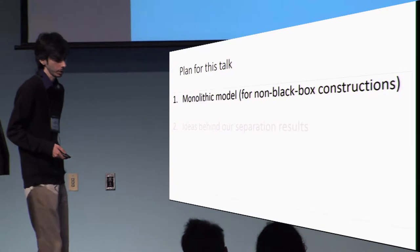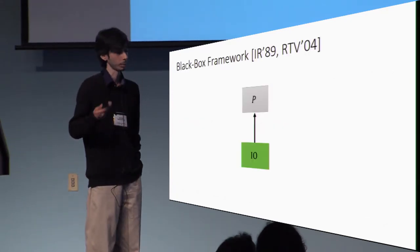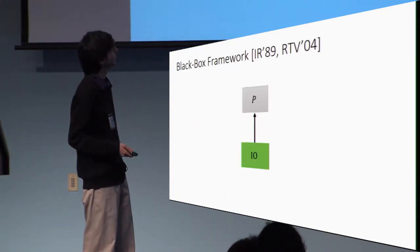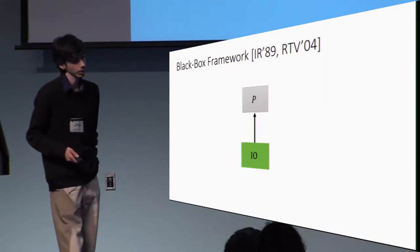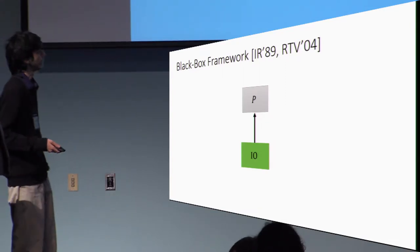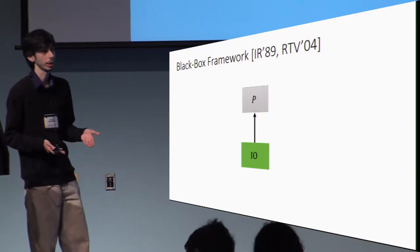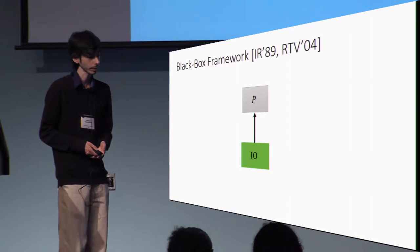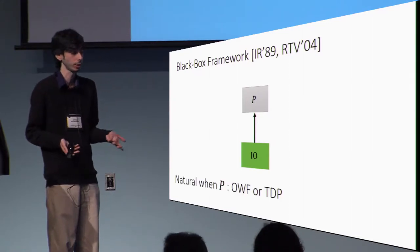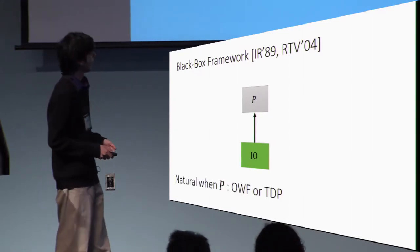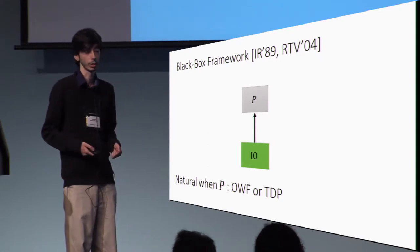In the classical blackbox framework of Impagliazzo-Rudich and Reingold-Trevisan-Vadhan, a blackbox construction of I.O. from P basically means that I.O. uses P in a blackbox way — it only uses the input-output behavior of P. This is natural when P happens to be a one-way function or a trapdoor permutation. However, this is not the case when we deal with more sophisticated primitives or non-blackbox techniques.